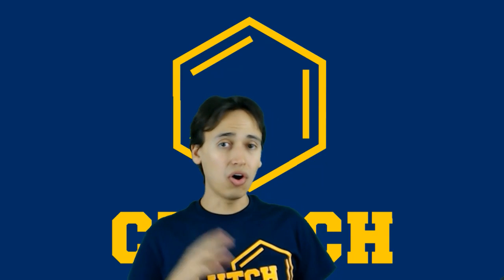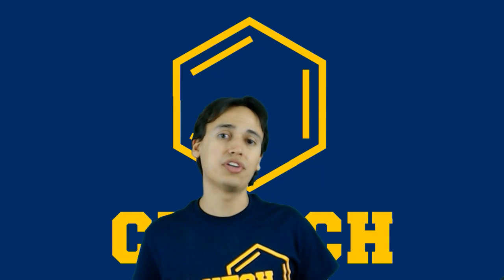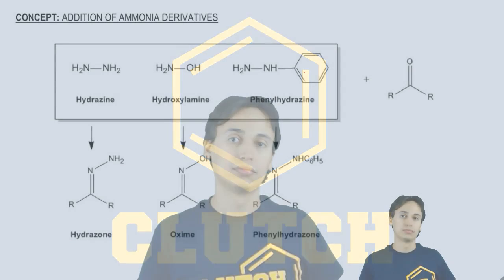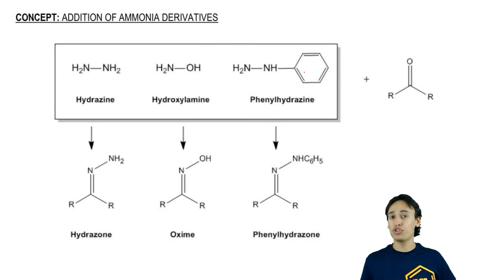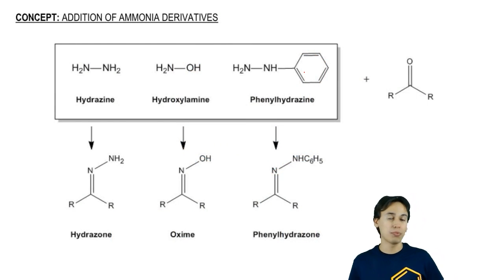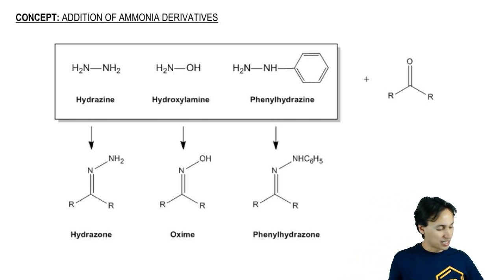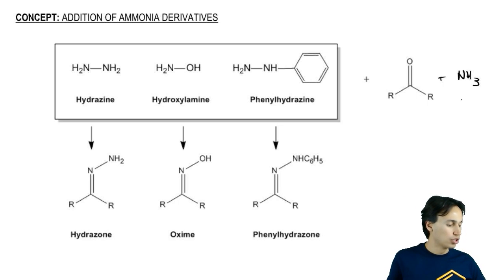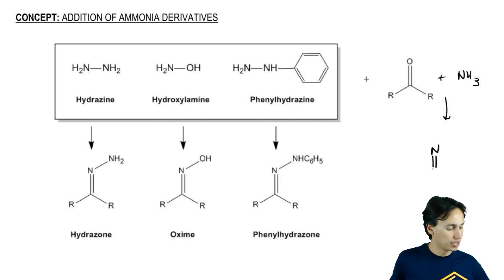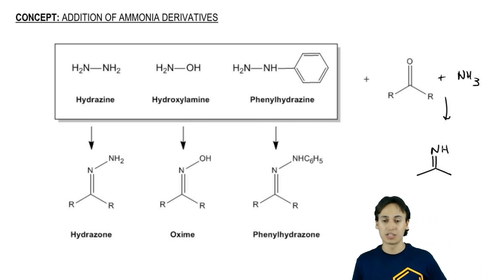In this video, we're going to discuss all the different things that you can make when you react an ammonia derivative with a carbonyl. You should feel pretty comfortable with the reaction of ammonia with a carbonyl. You know that in an acidic environment, you add ammonia to a carbonyl and you're going to get an imine — nitrogen double bond carbon. It looks like a carbonyl except it's a nitrogen.